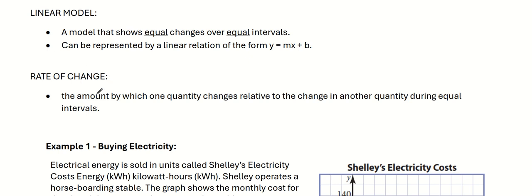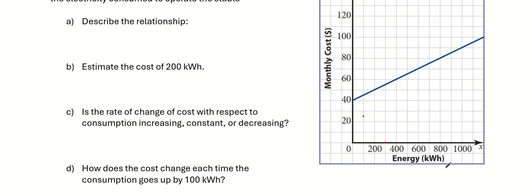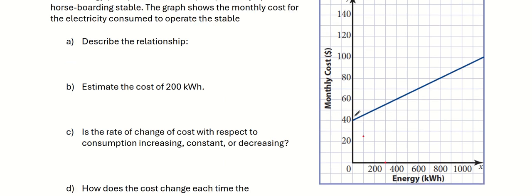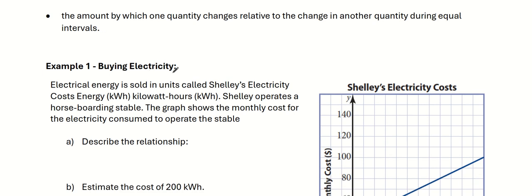What is the rate of change? The definition here says: the amount by which one quantity changes relative to the change of another quantity during an equal interval. For example, something like monthly cost — how much the cost changes relative to energy would be the rate of change. So one thing is changing in comparison to another thing. The best way to understand these concepts is to actually do the problems.